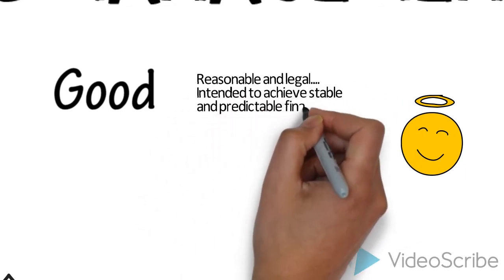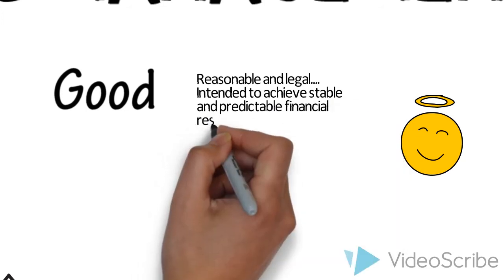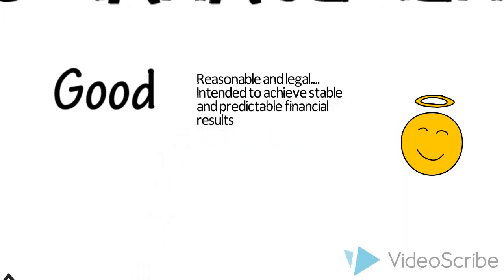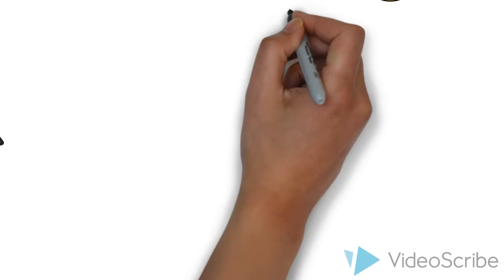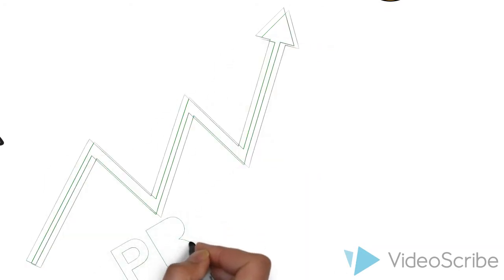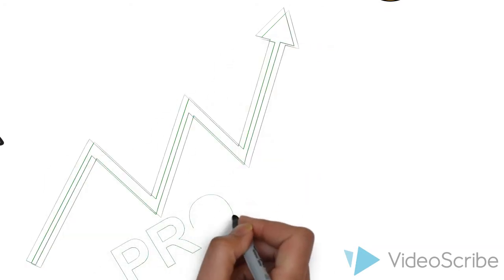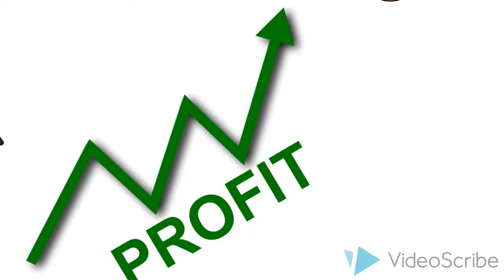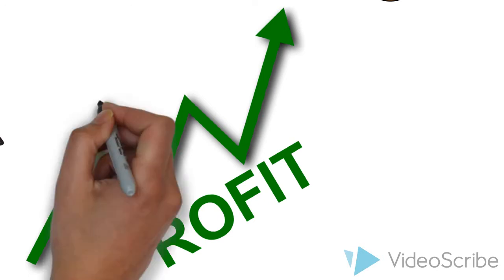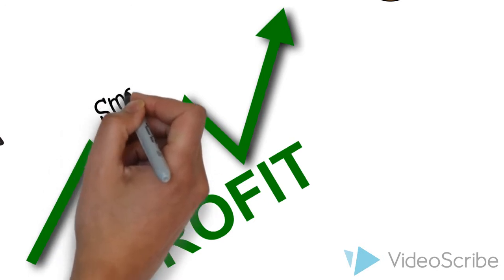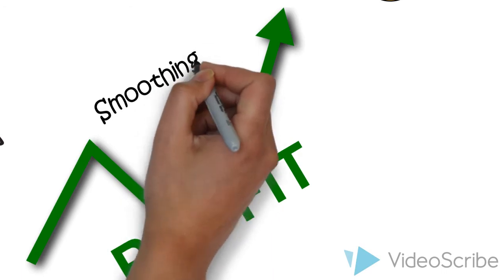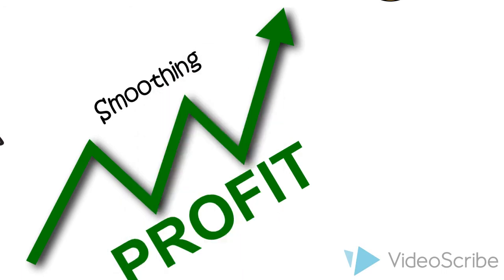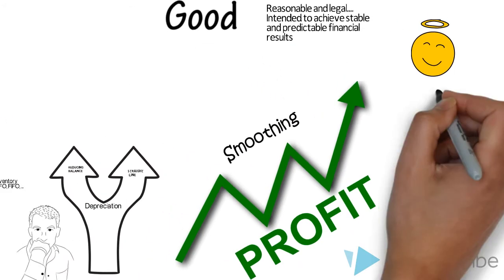It can be described as reasonable and legal, intended to achieve a stable and predictable financial result. Income smoothing is an example of providing stable and predictable financial results by shifting earnings from peak periods to less successful periods. This can be used to increase earnings quality.